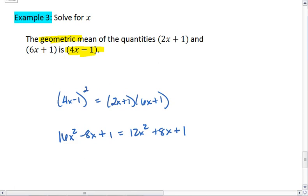We can subtract 1 from both sides giving us 16x squared minus 8x equals 12x squared plus 8x. Subtract 12x squared from both sides, we get 4x squared minus 8x equals 8x. Add 8x to both sides, we get 4x squared equals 16x.